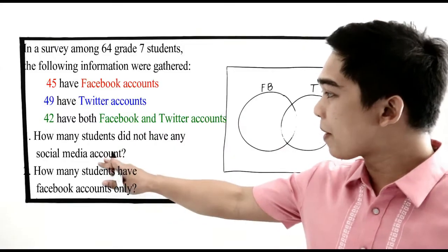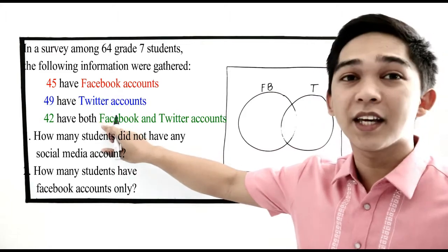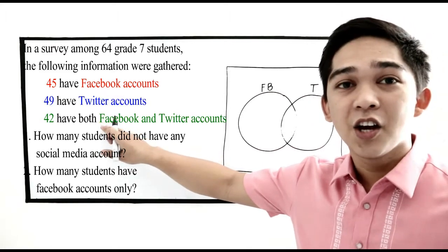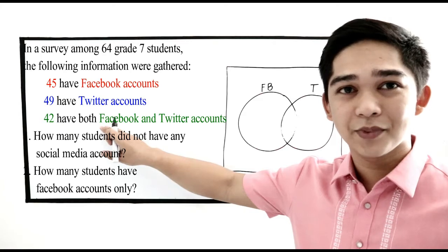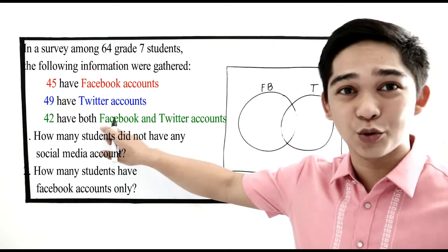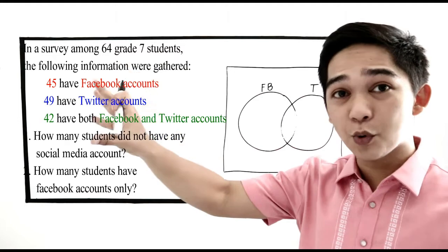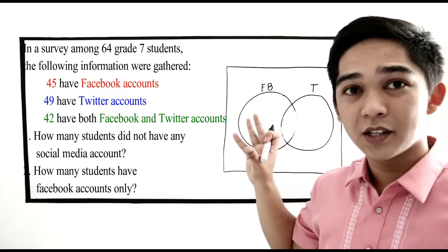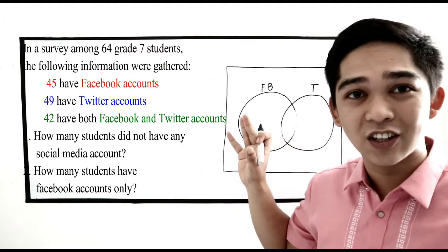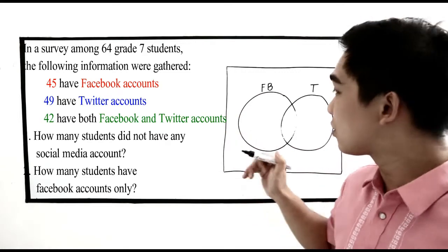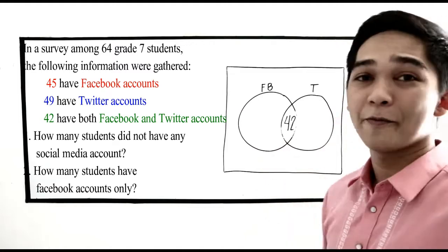So we're working backwards. The last given mentioned is: 42 have both Facebook and Twitter accounts. So where do we place 42? Since they have both Facebook and Twitter, it is clearly in the intersection of the two sets. So we write 42 in their intersection.